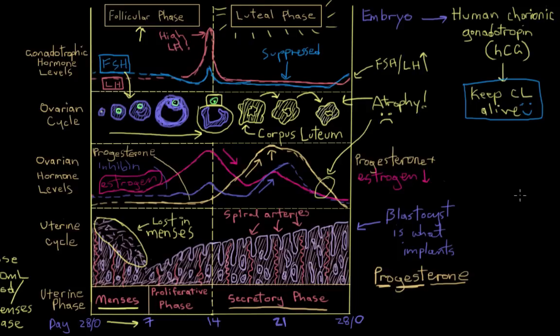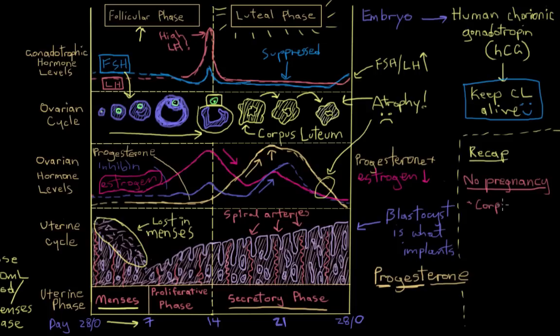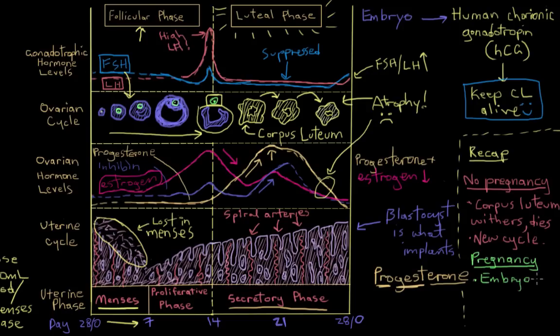Third, the corpus luteum being rescued or kept alive means that its continued hormone release maintains that endometrial lining. So the lining isn't lost in menstruation. It's kept in order to support the pregnancy. So just to recap, if no pregnancy occurs, then the corpus luteum withers away and the reproductive cycle just continues to repeat itself about every 28 days. And if pregnancy does occur, the implanted embryo starts to produce HCG, which rescues the corpus luteum from atrophying and the endometrium is thus maintained. So no menstruation happens because you're not losing the endometrium and the reproductive cycle is put on hold for the duration of the pregnancy.